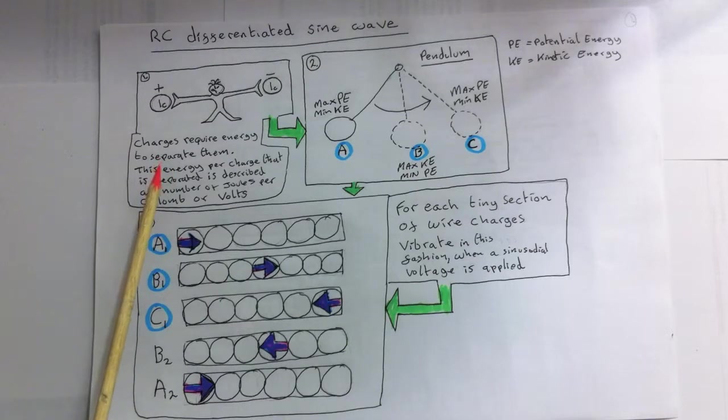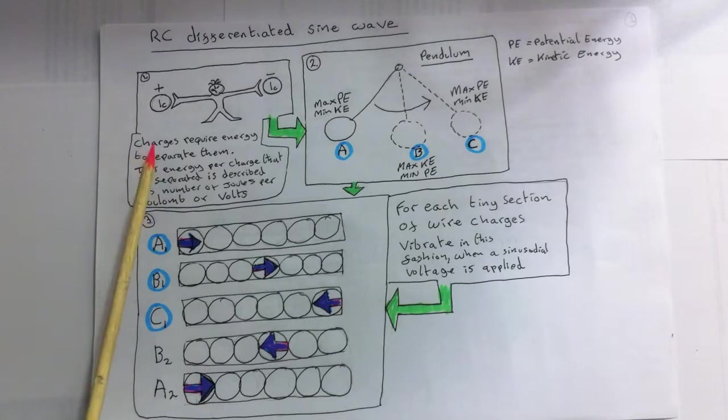Now we have what is called voltage because of that. The amount of energy stored per coulomb, in this case, it's one joule per coulomb or one volt.